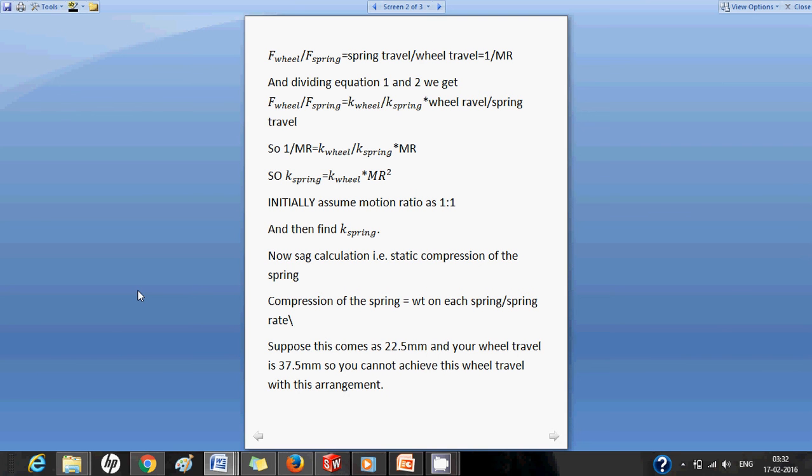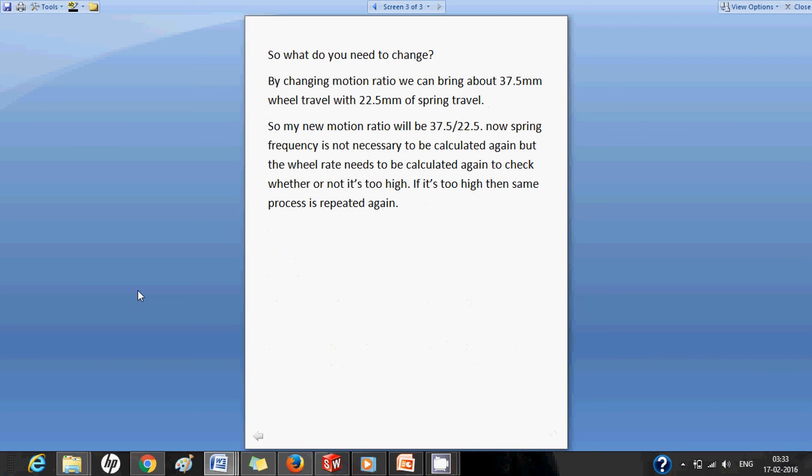So the next part of the calculation is to do the sag calculations. So for sag calculation compression of the spring is equal to weight on each spring divided by the spring rate. So suppose it comes at 22.5mm and what my desired wheel travel is 37.5mm. So now the problem statement becomes that with 22.5mm of spring compression we need to have 37.5mm of wheel travel. So this will not work with 1 is to 1 motion ratio. We have to change the motion ratio to get this type of effect.